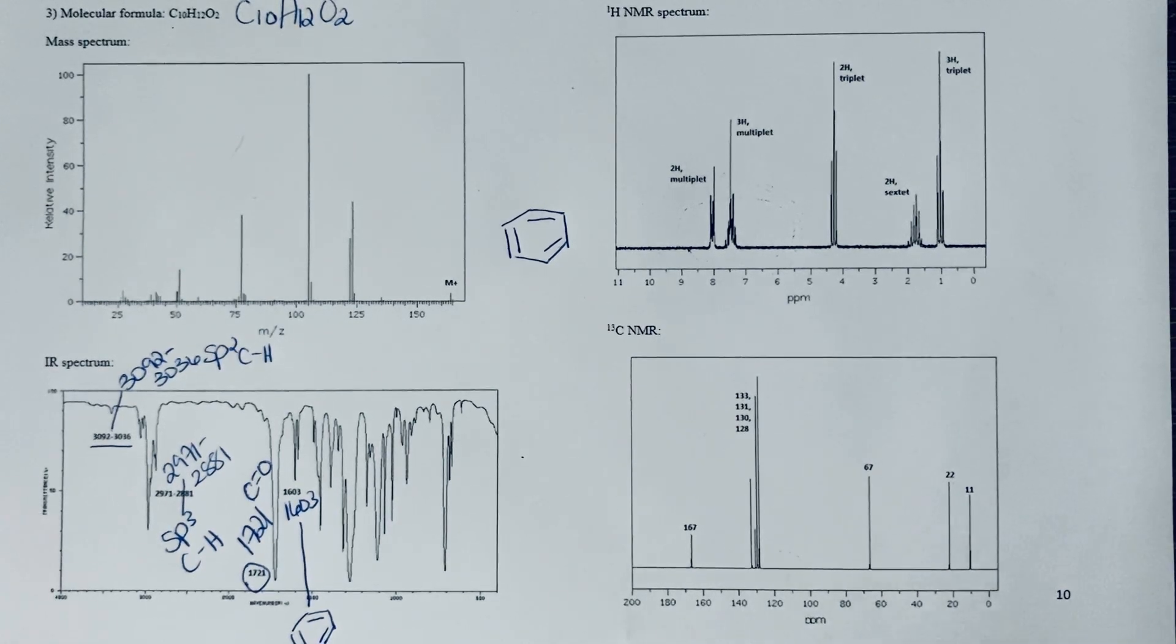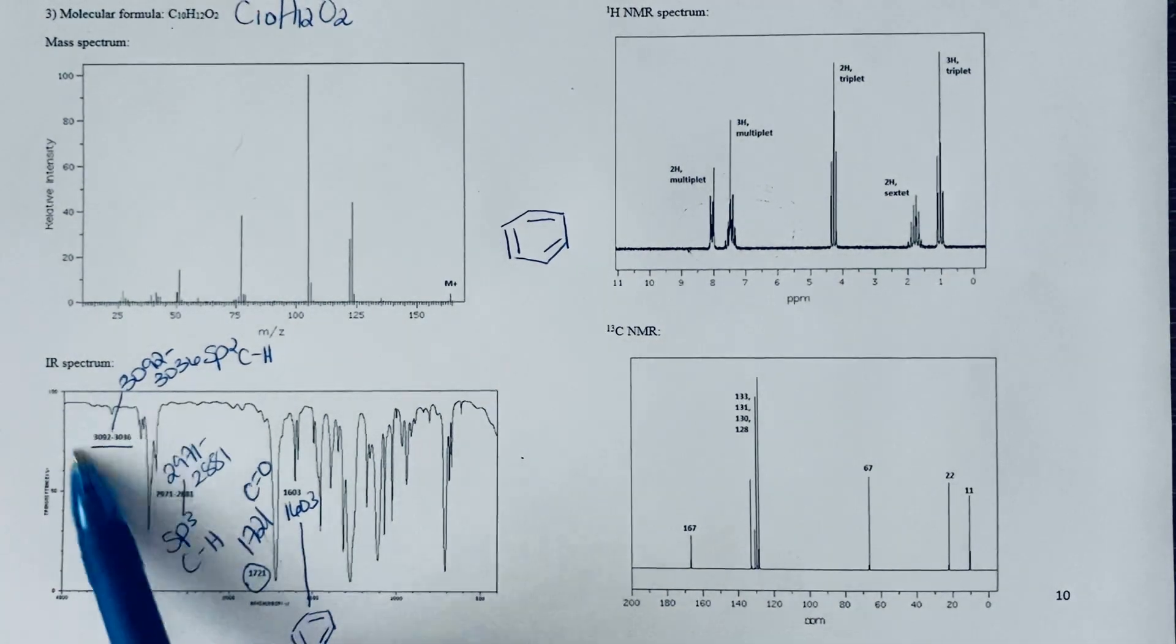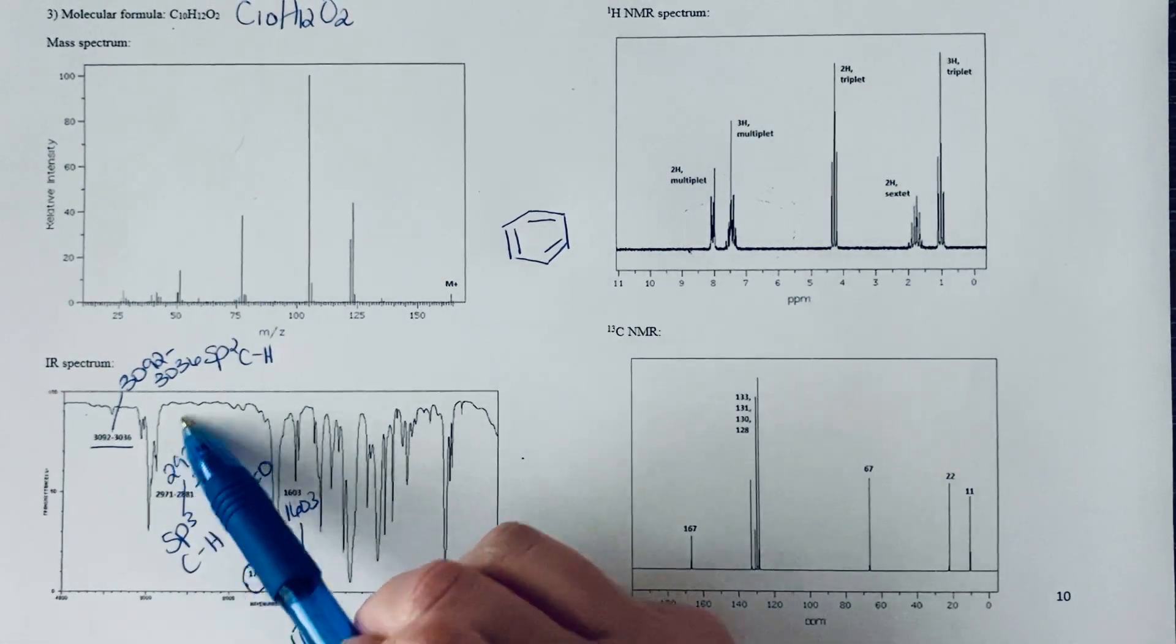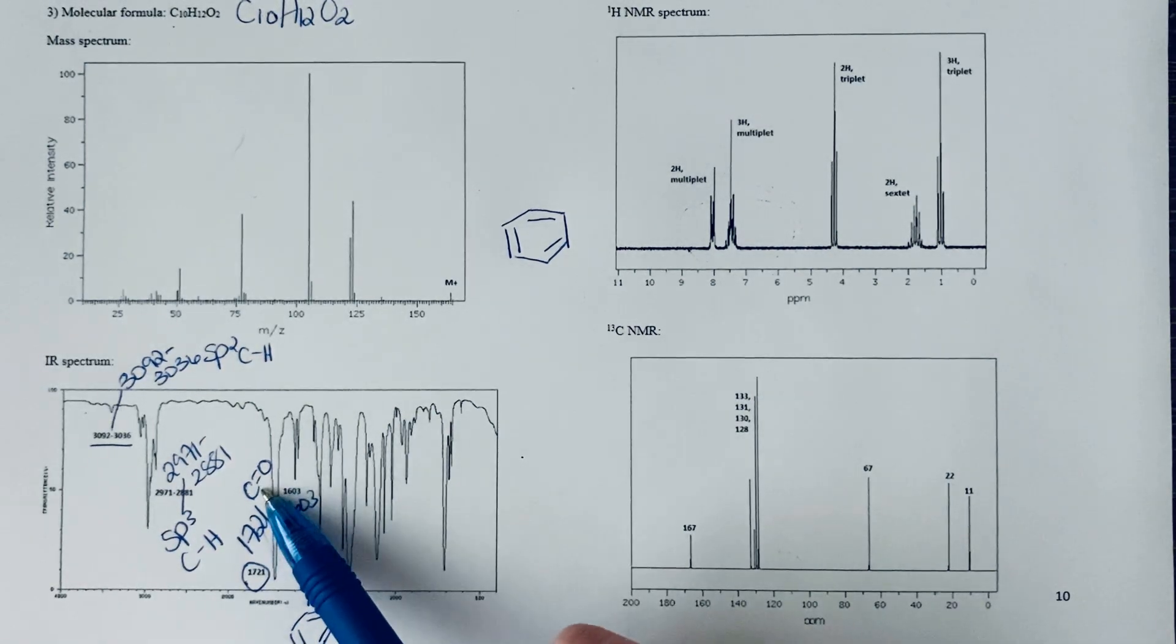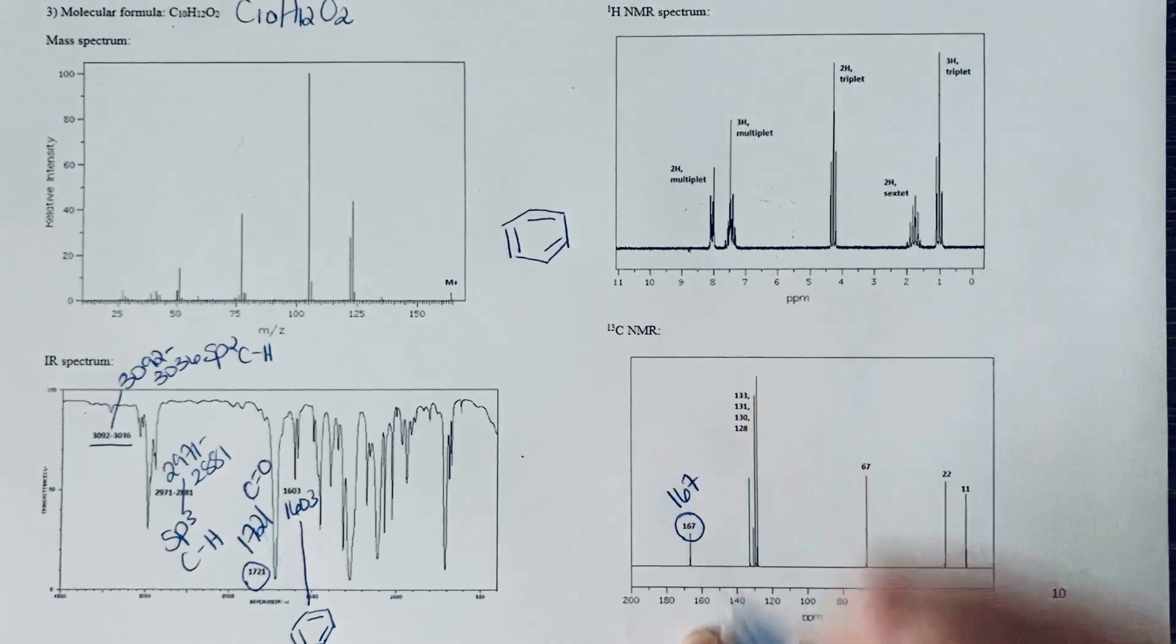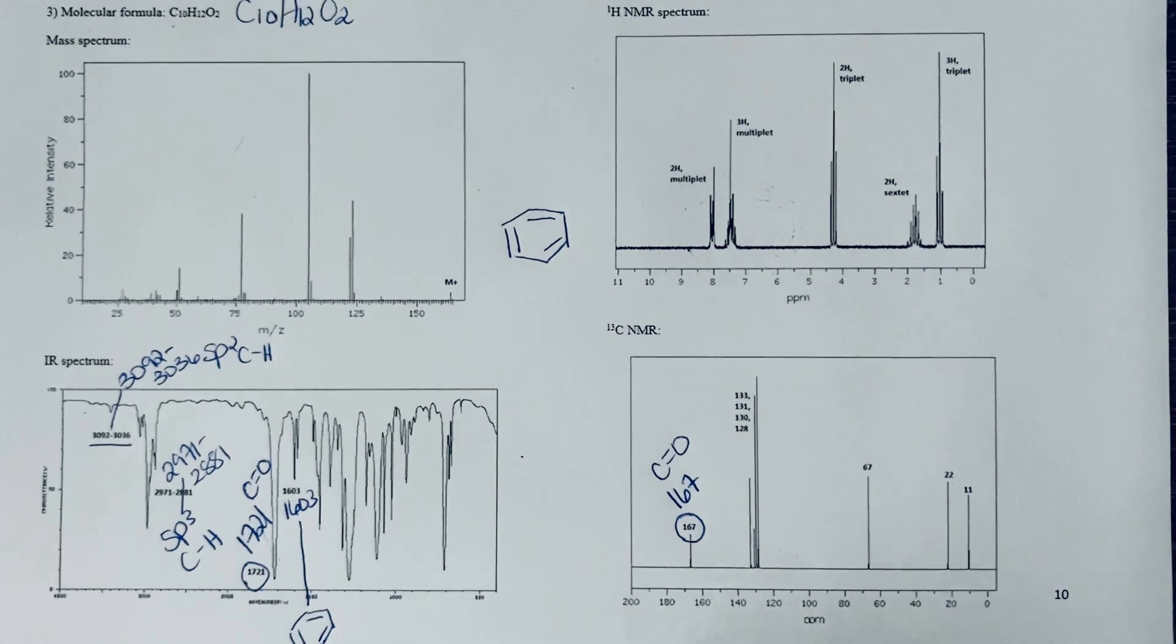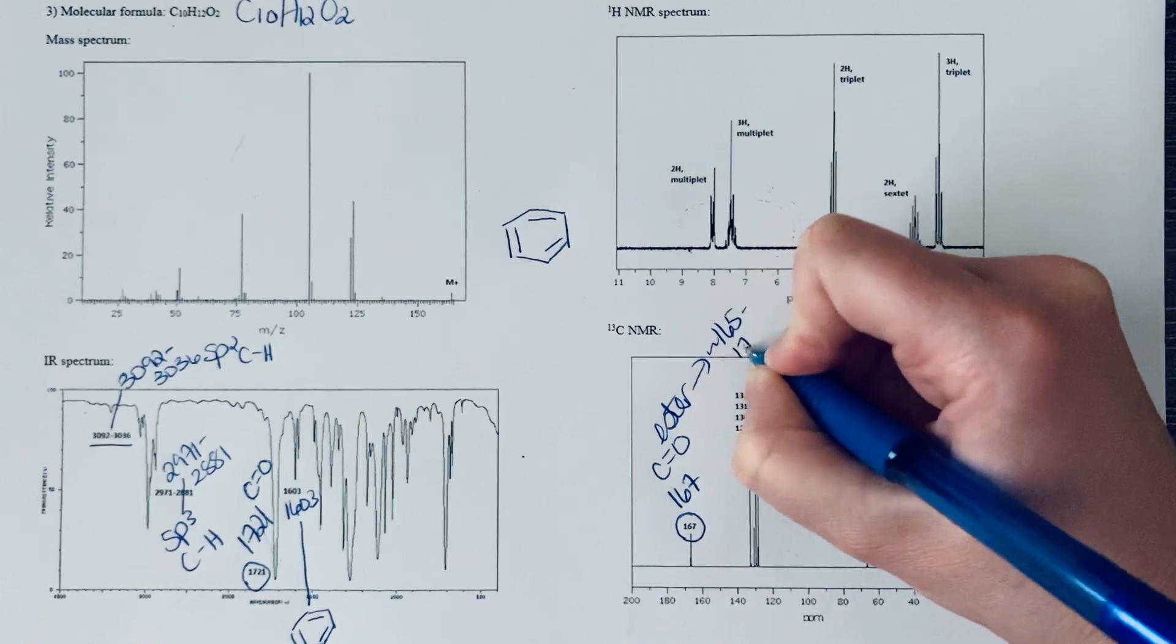Looking at other information: we don't have an OH so it's not a carboxylic acid, we don't have aldehyde CHs so it's not an aldehyde. This might be either a ketone or an ester. A fast way to figure that out is to find that carbonyl peak in the carbon-13 at 167. This is consistent with an ester, which typically shows up at approximately 165 to 175 ppm.